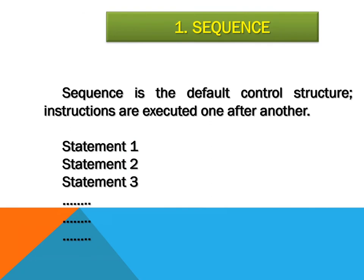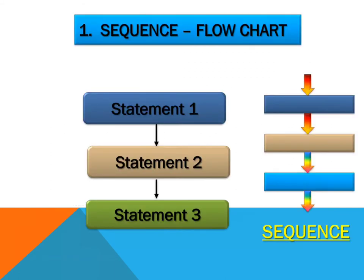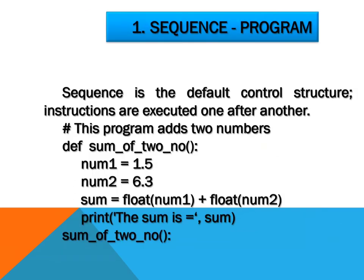Sequence. Sequence is the default control structure, where instructions are executed one after another — statement 1, statement 2, statement 3 and so on. Here is a sequence program example that adds two numbers. We define the sum of two numbers: num1 is 1.5, num2 is 6.5, sum equals float(num1) plus float(num2), then print the sum. This way we can easily find the sum of two numbers.